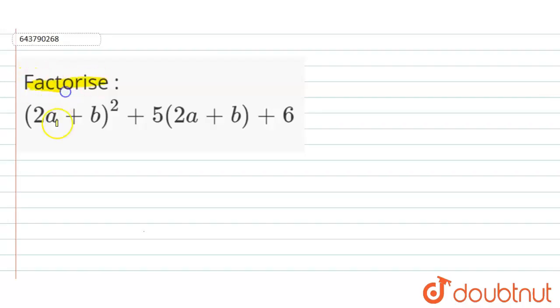We have to factorize (2a + b)² + 5(2a + b) + 6. Now let's come to the solution. In the question, we have (2a + b)² + 5(2a + b) + 6.